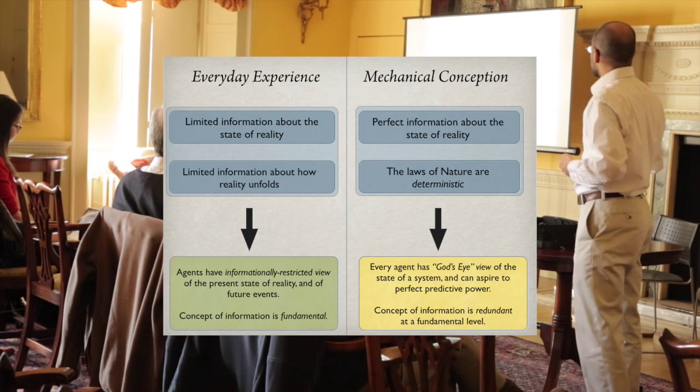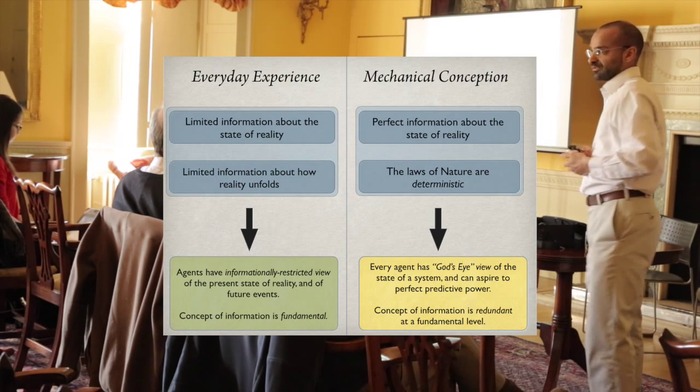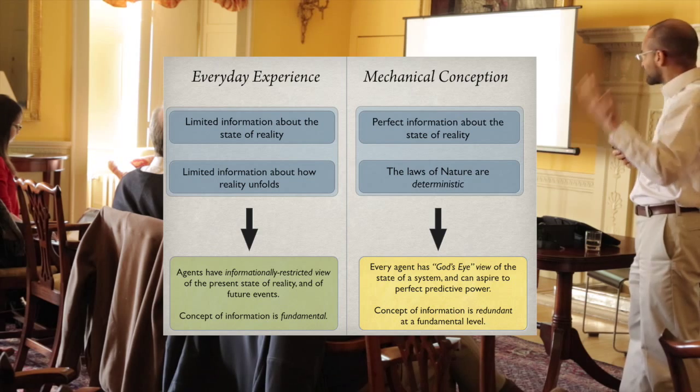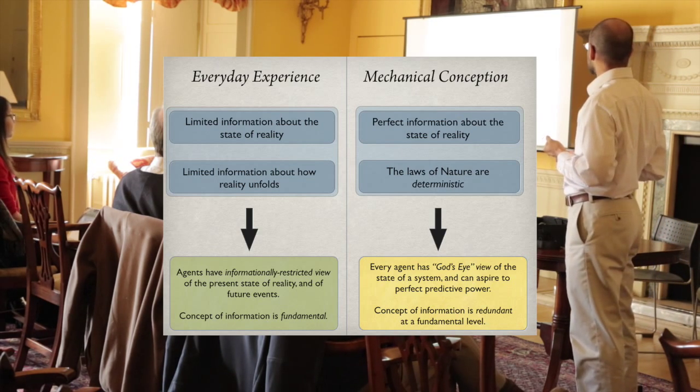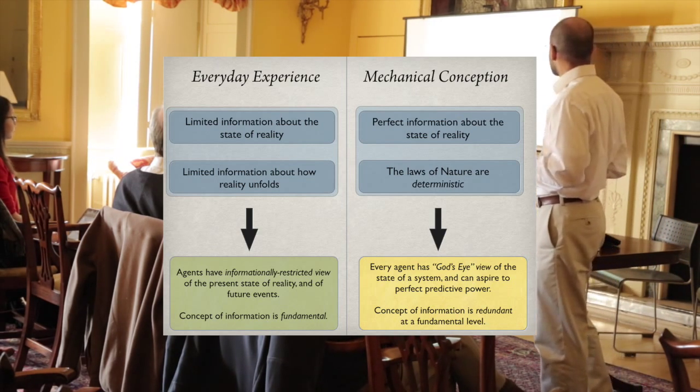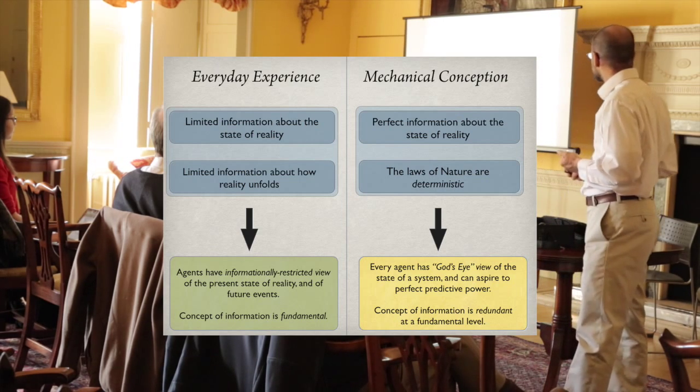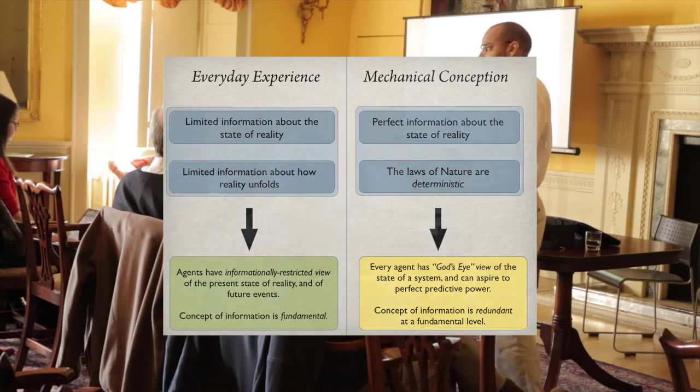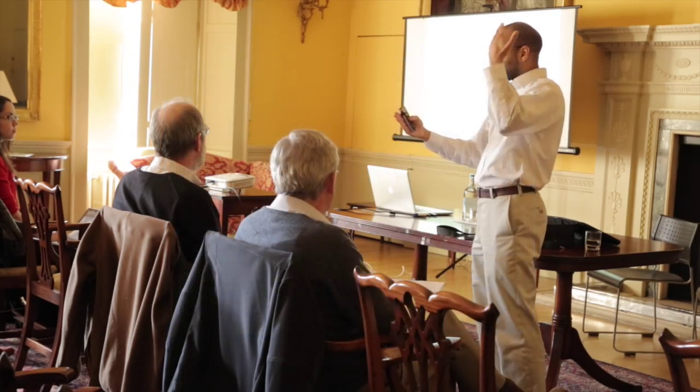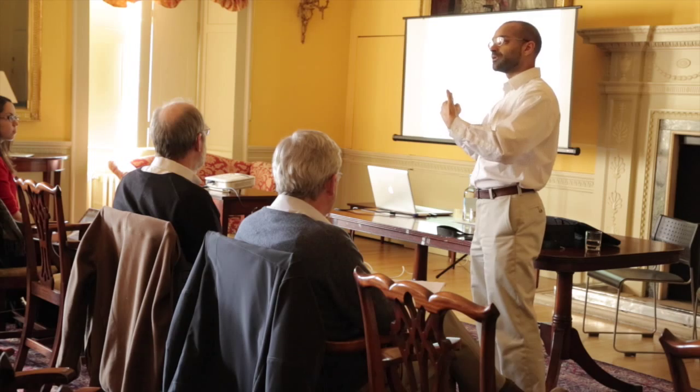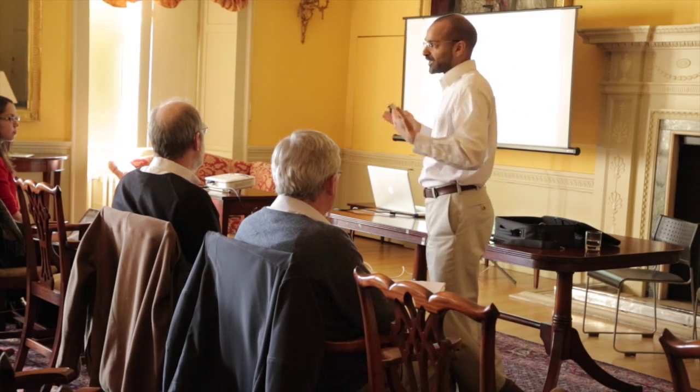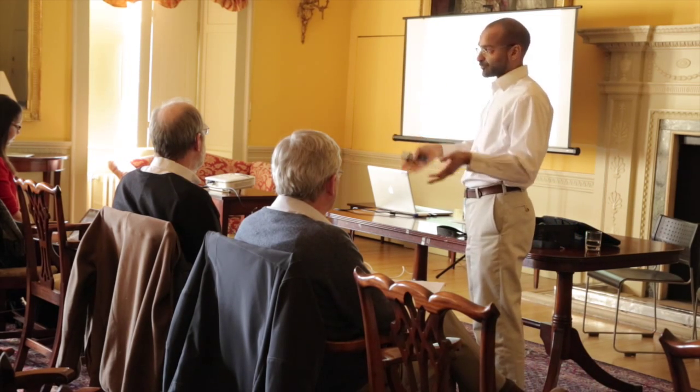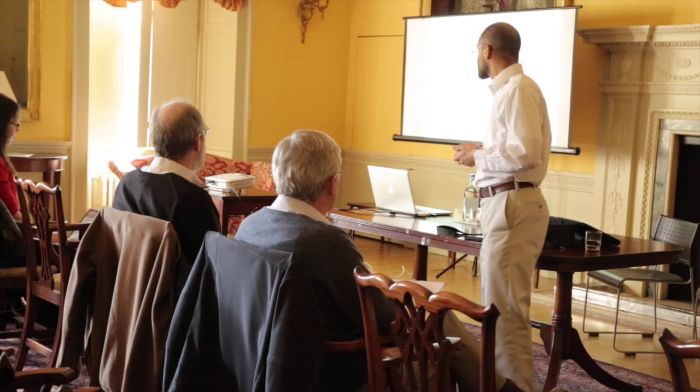In the mechanical conception, every agent, in principle, ideally, has a god's-eye view of the state of the system and can aspire to perfect predictive power. The concept of information is redundant at the fundamental level. There's no distinction between what an agent ideally knows and what exists. They collapse onto one another, so one has perfect information about the present and future events.